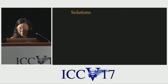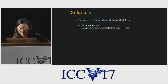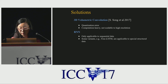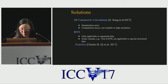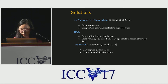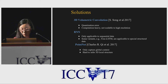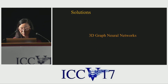One possible solution is 3D volumetric convolutions, but it is not scalable to high resolution volumes. Another solution is to use RNNs; however, RNNs are limited to sequential data. PointNet is a recent model proposed to handle point cloud data, but PointNet can only capture global context, and it takes raw location information as input, making geometric information very hard to exploit. We propose to model 3D point cloud as a graph.